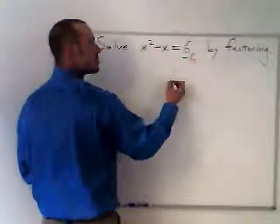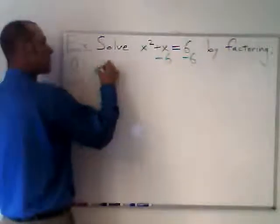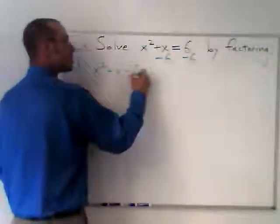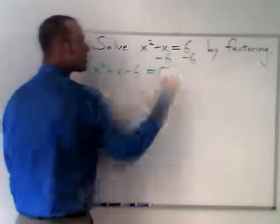If I subtract six, well, I need to do that to both sides. I get X squared plus X minus six on the left-hand side. And six minus six is zero on the right-hand side.